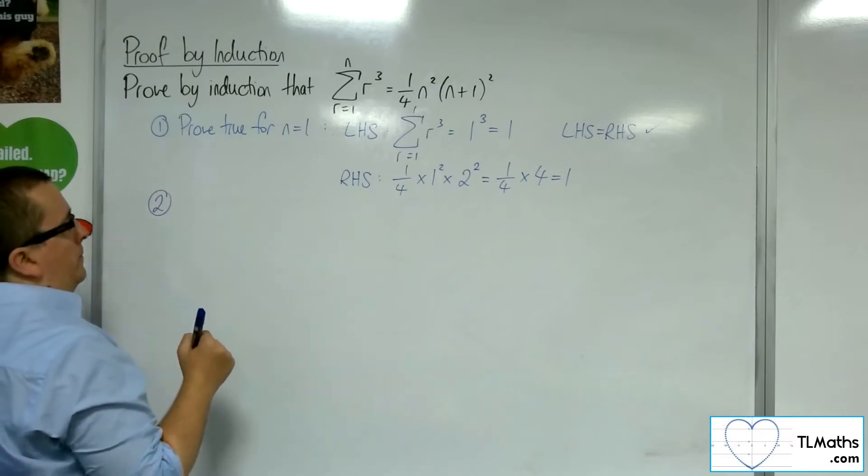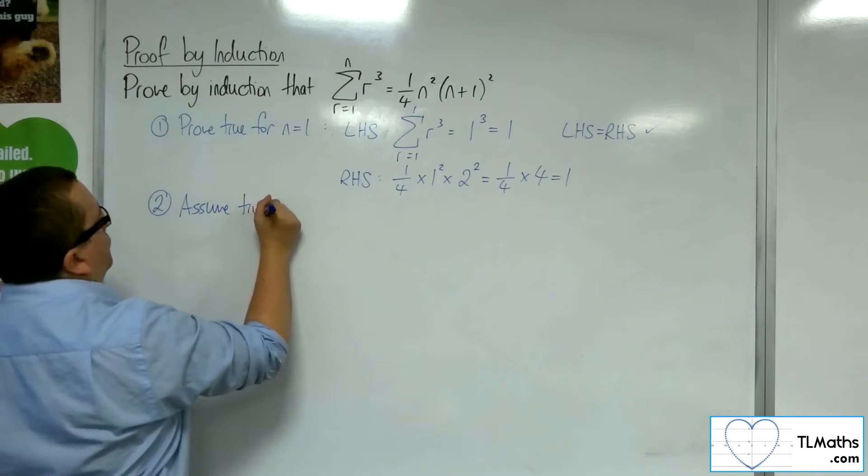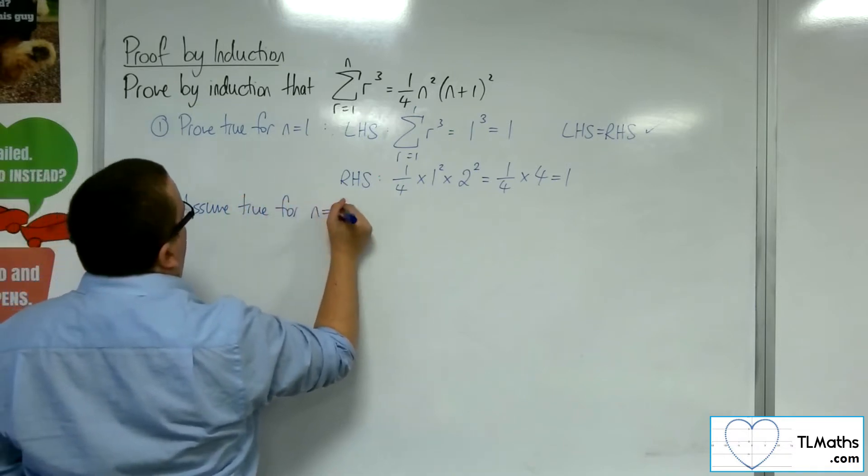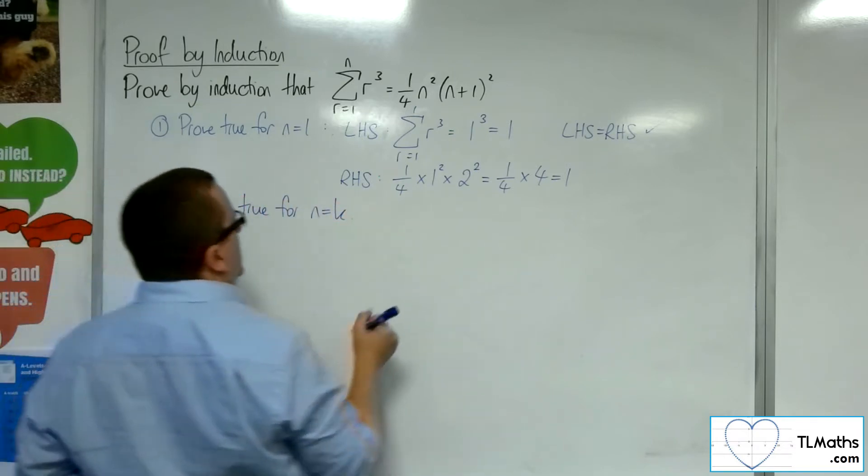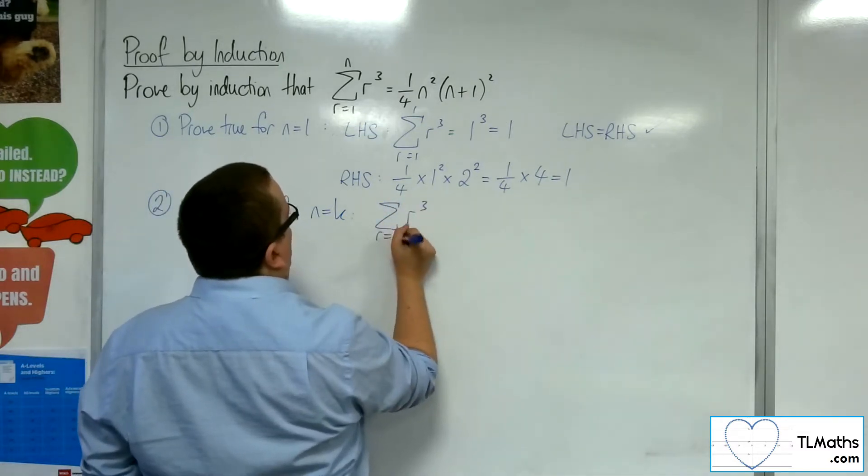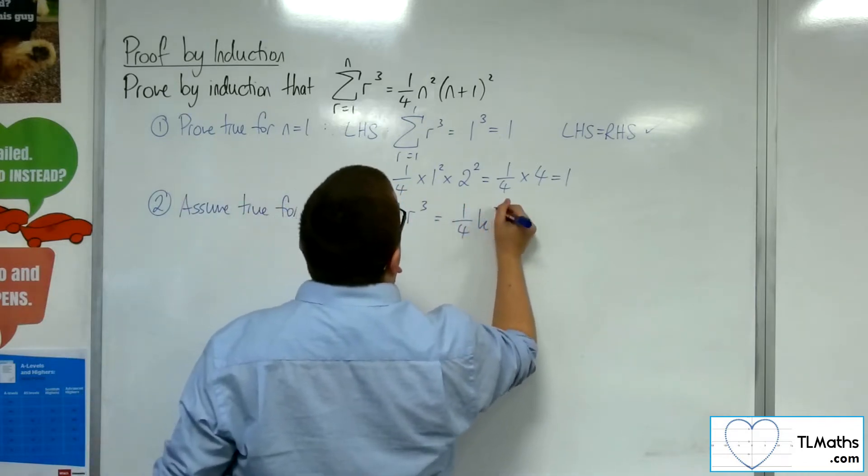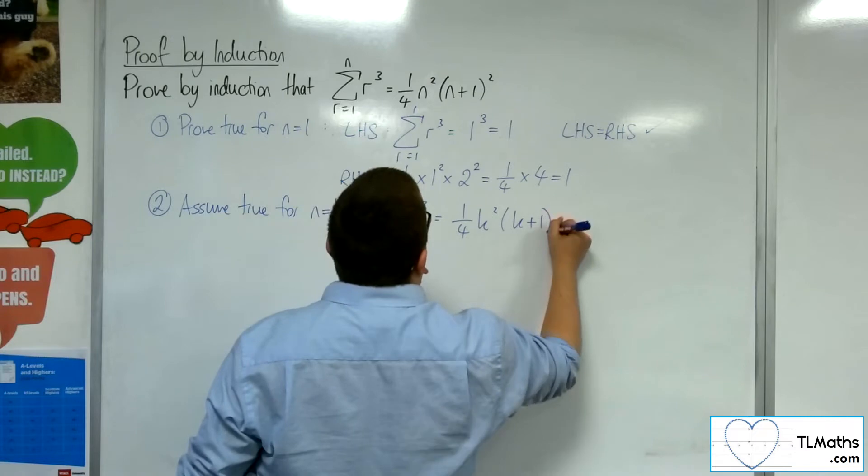Step number 2. Assume true for n equals k. So I'm going to put the sum of r cubed from r is 1 to k equal to 1 quarter k squared k plus 1 squared.